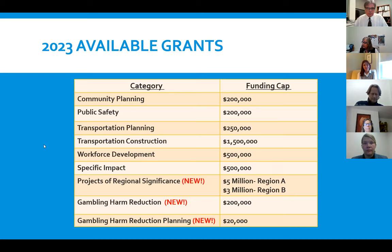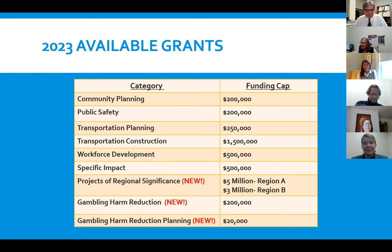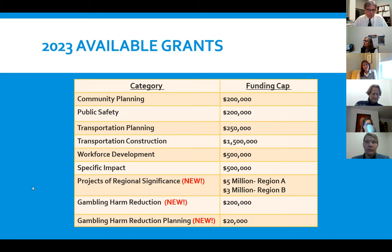Projects of regional significance is a new category with $3 million for Region B and $5 million for Region A, found in section 2.7 of the guidelines. It's designed to mitigate identified gaming impacts affecting multiple communities. The gambling harm reduction grants are also brand new this year — community engaged research projects with two types: one for $20,000 and one for $200,000.